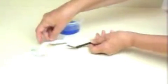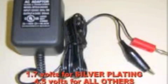There are two different AC adaptors for plug and plate kits. The 1.7V unit is used for only silver plating. The 4.5V unit is used for all other kits.